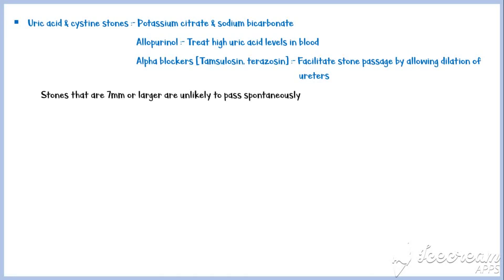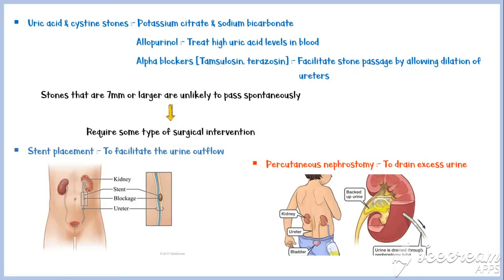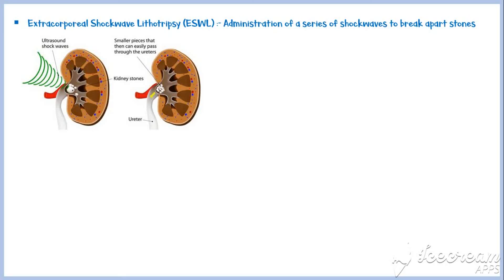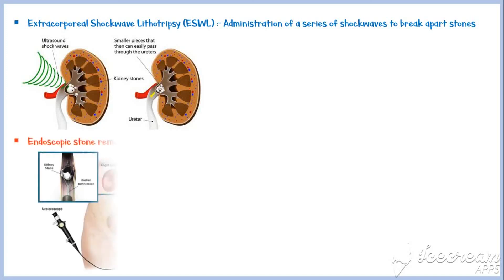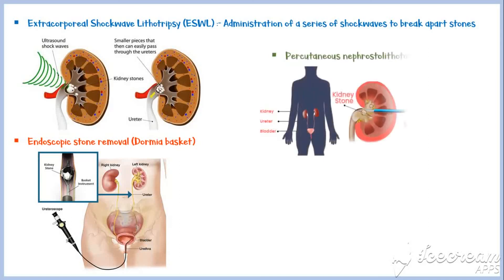Stones 7 mm or larger are unlikely to pass spontaneously and require surgical intervention, including stent placement to facilitate urine outflow, percutaneous nephrostomy to drain excess urine in case of obstruction, extracorporeal shockwave lithotripsy — a technique where shockwaves are administered to break apart stones and allow them to pass during urination — endoscopic stone removal (also known as dormia basket), in which an endoscope is inserted into the urinary tract to remove stones, and percutaneous nephrolithotomy, where a nephroscope is inserted through the skin into the kidney to remove stones. If none of these methods can remove the stones, open surgical procedures are performed.